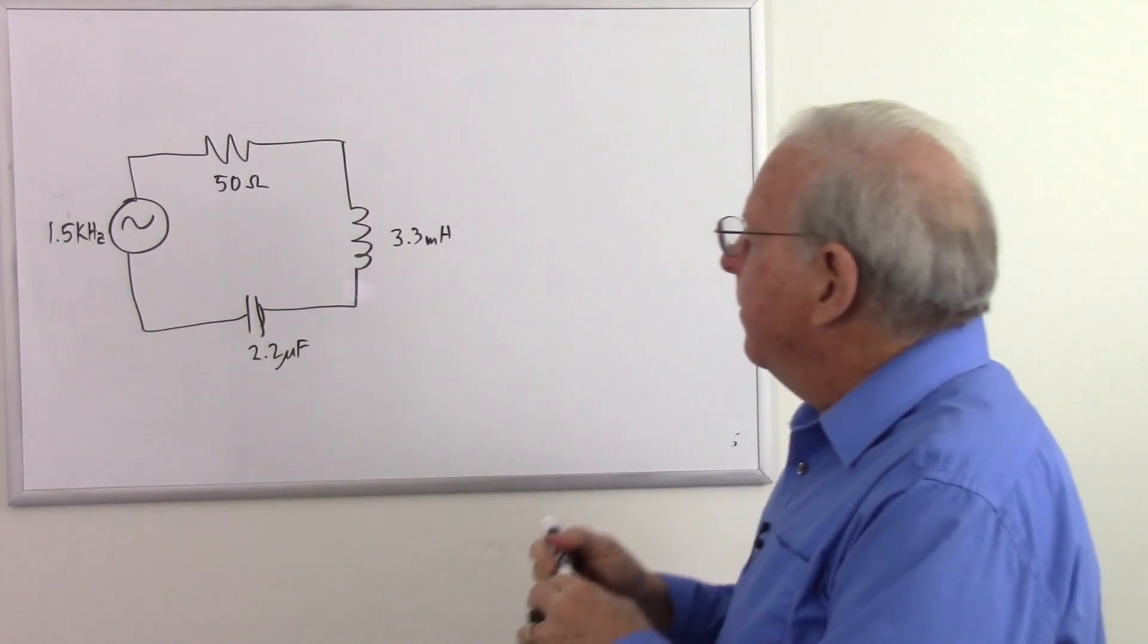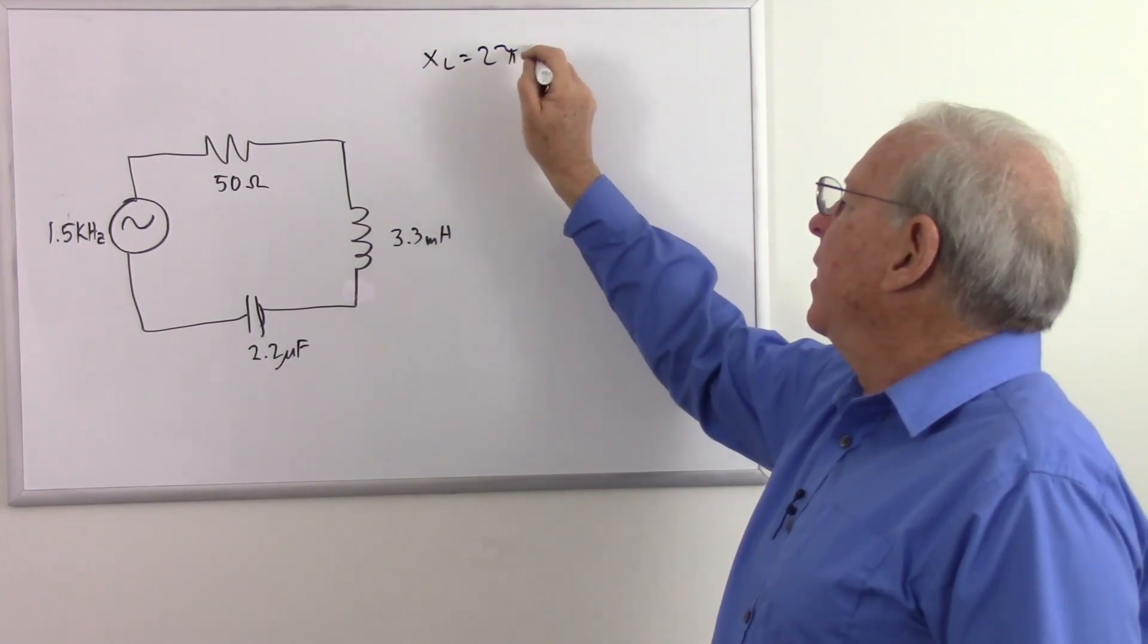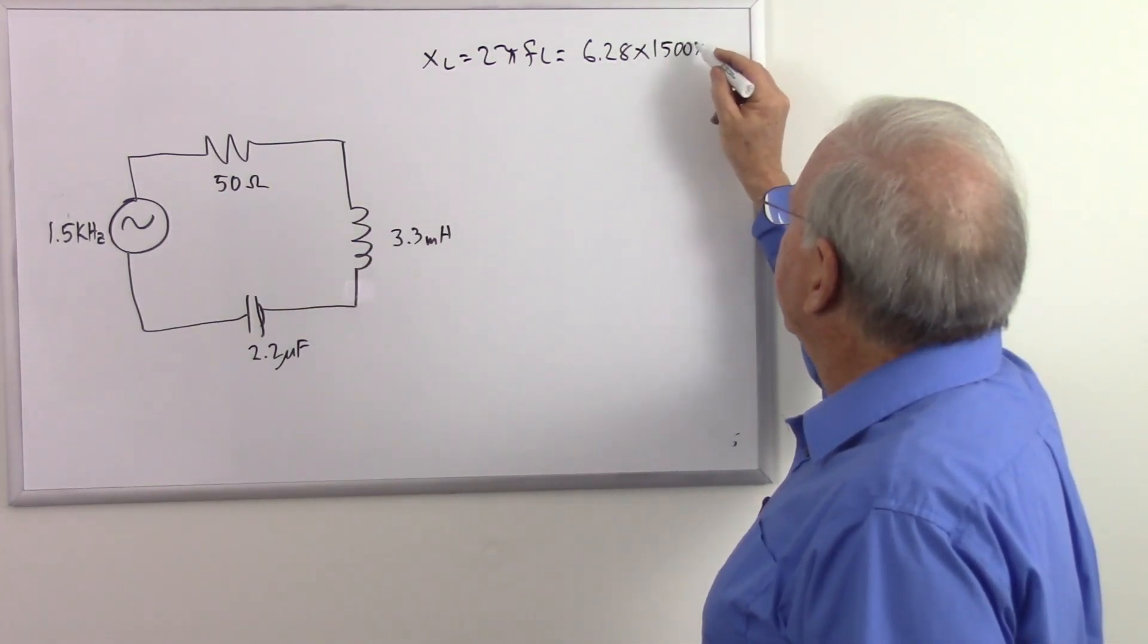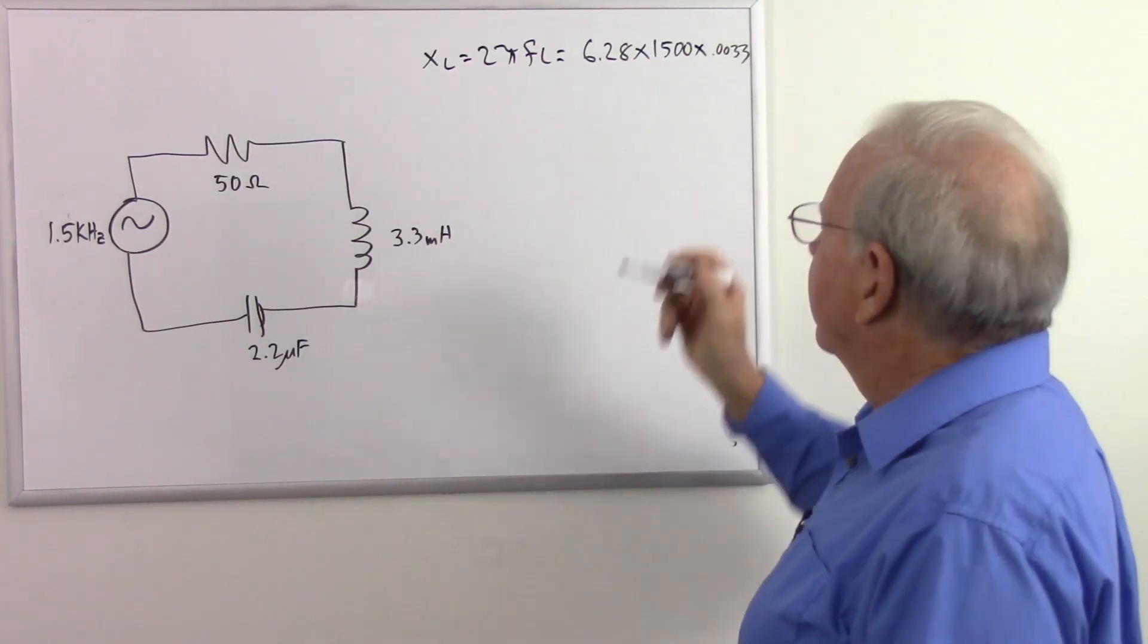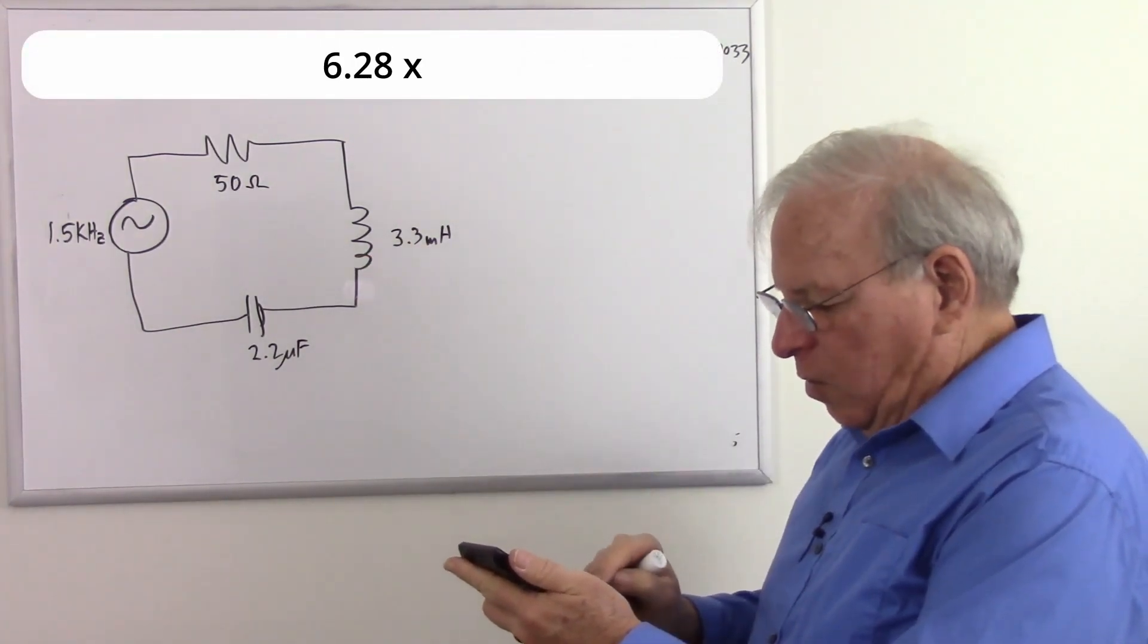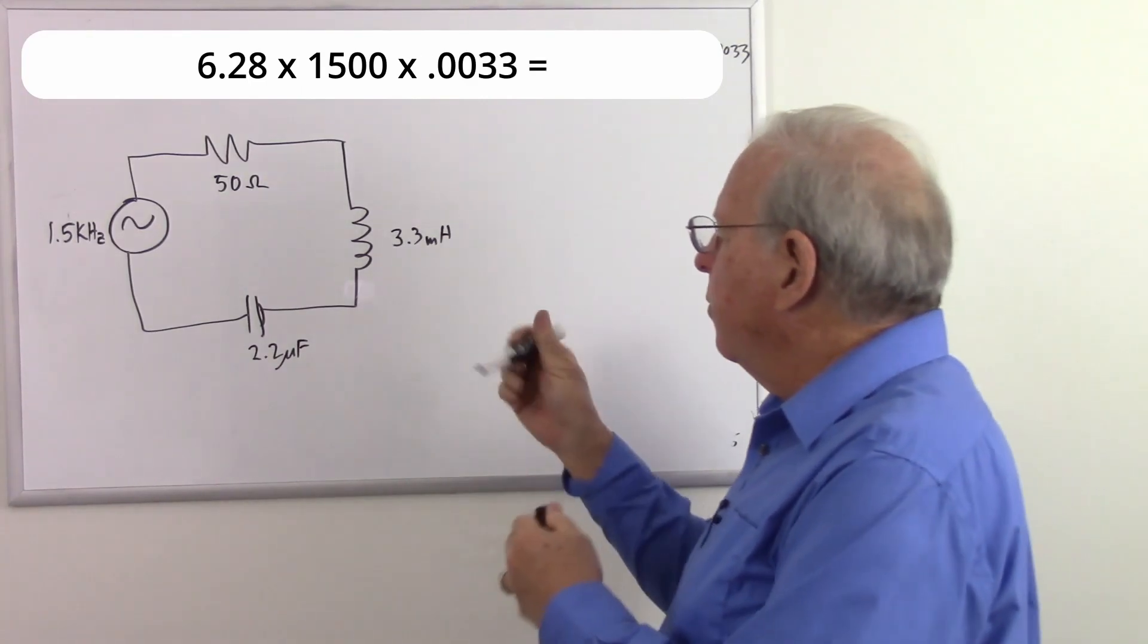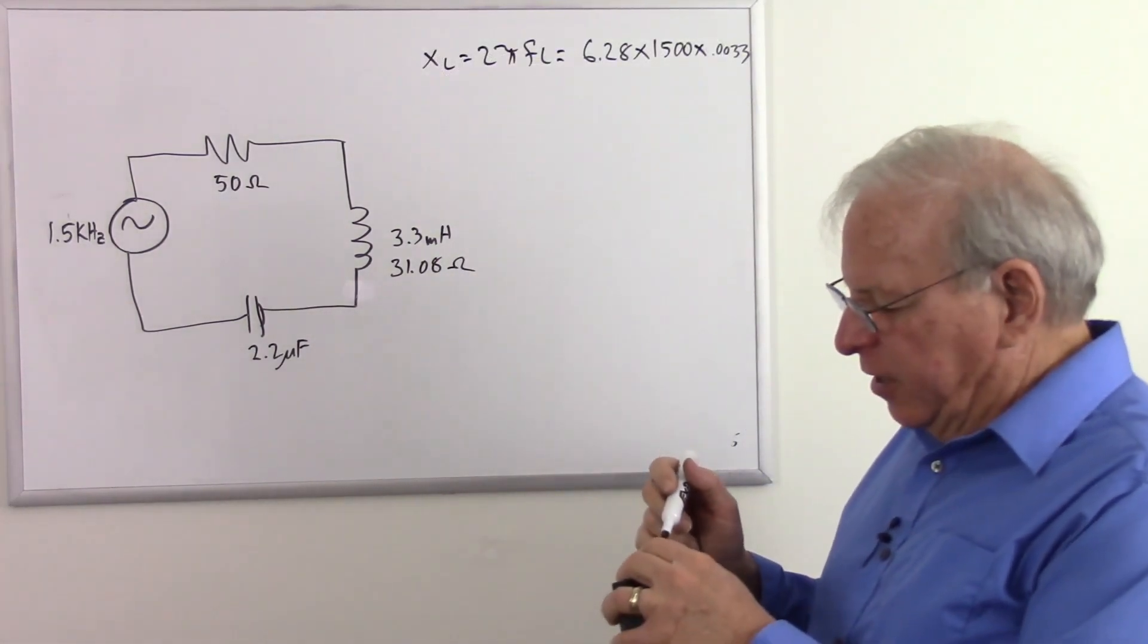So one last time. We need the inductive reactance. X of L equals 2 pi F L, which equals 6.28 times 1,500 times 0.0033. So 6.28 times 1,500 times 0.0033 equals 31.08 ohms of inductive reactance.